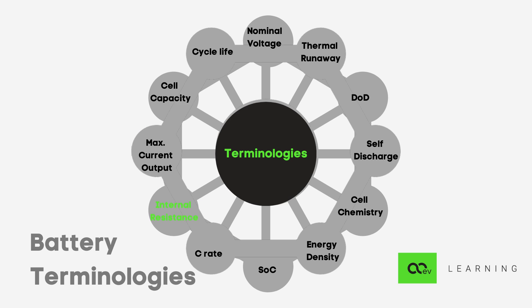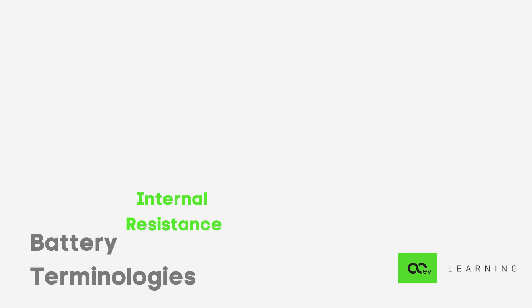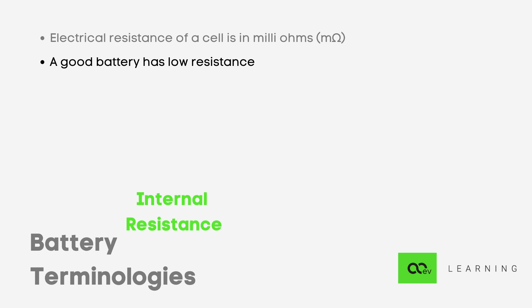Next is internal resistance. Every circuit component has internal resistance, and the cell has its own as well. It is the electrical resistance of an individual cell, expressed in milli-ohms. A good cell has a lower internal resistance.